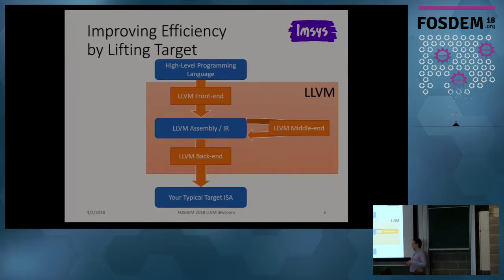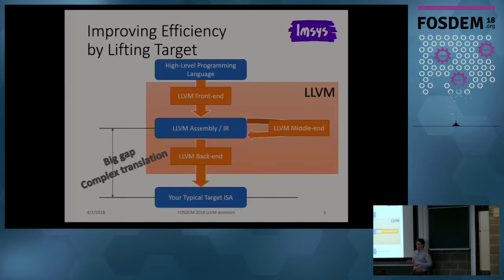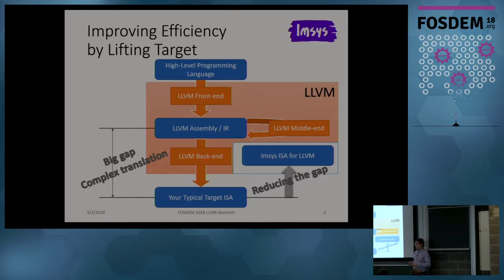This talk is about how we want to improve the efficiency. If you consider LLVM assembly and a typical target architecture, there is a big gap. The back end needs to do typically complex translations — there is a big semantical gap. Instruction set architectures are typically not designed with respect to the compiler's intermediate representation. What we want to do at IMSIS is lifting the instruction set architecture closer to the LLVM assembly level, reducing the gap, and then using an LLVM back end to target this architecture.